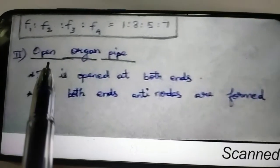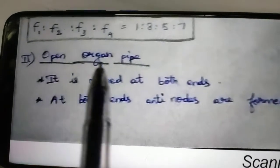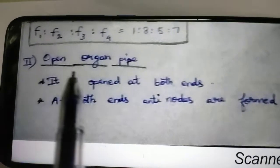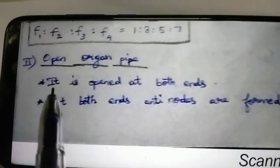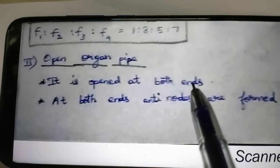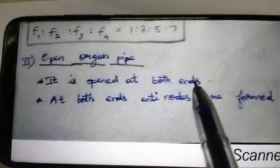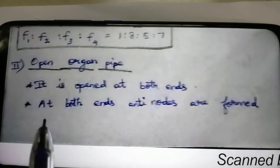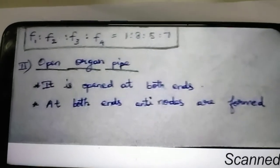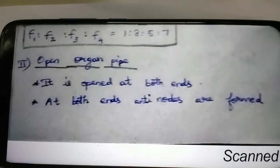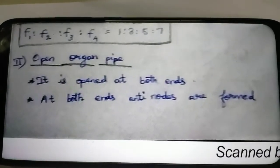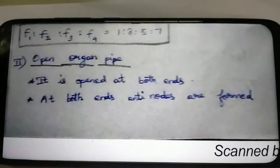Students, the next step is the open organ pipe. The open organ pipe is open at both ends. At both open ends, the antinodes are formed. At the closed end, the nodes are formed.